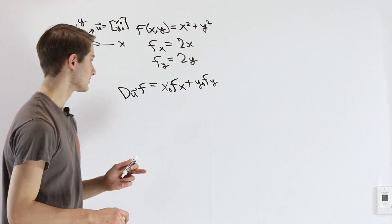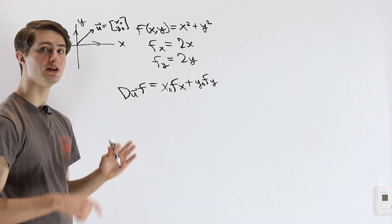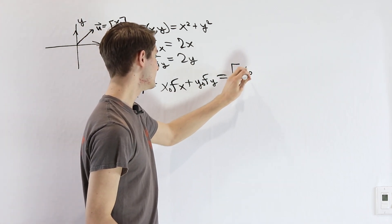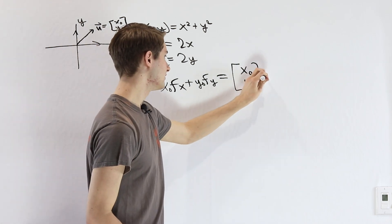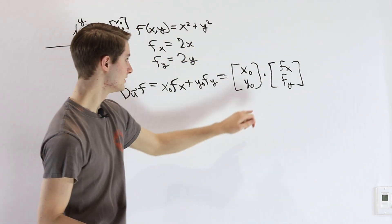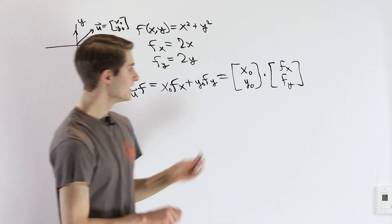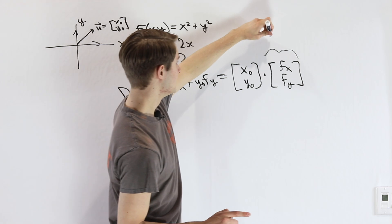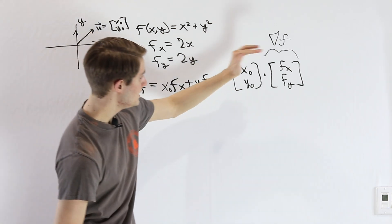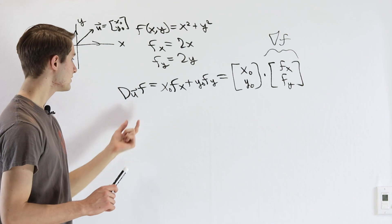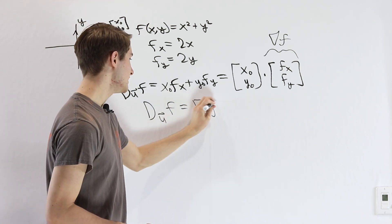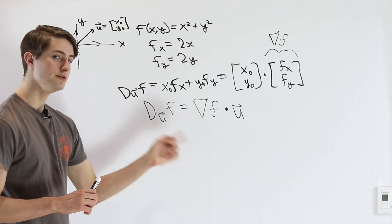There's another way to express this by thinking about this addition in terms of a dot product. We can say this sum is the same as taking the vector (x0, y0) and dotting it with the vector of partial derivatives (f_x, f_y). The vector on the right side — (f_x, f_y) — is called the gradient vector of f, denoted with an upside-down triangle next to the function symbol. So one way to express the directional derivative is: take the gradient vector of f and dot it with the unit vector in the direction we're looking at.